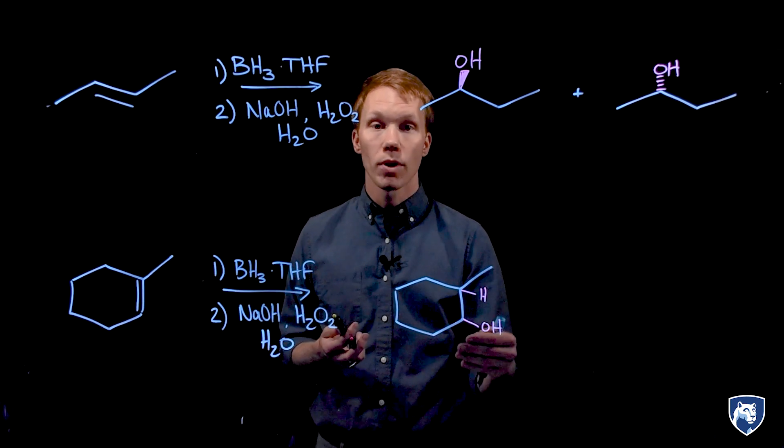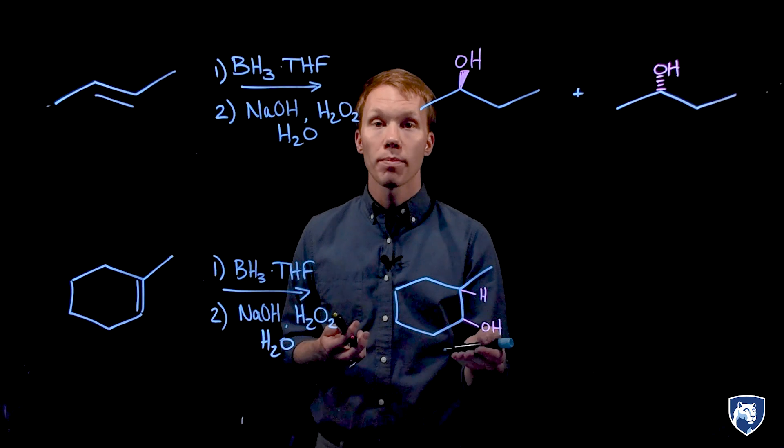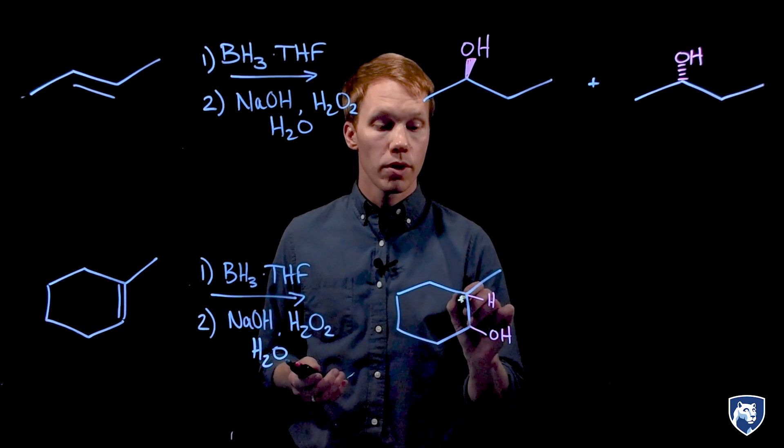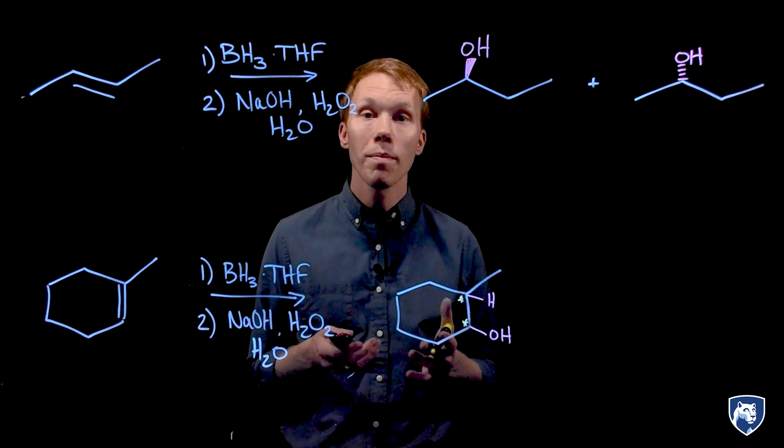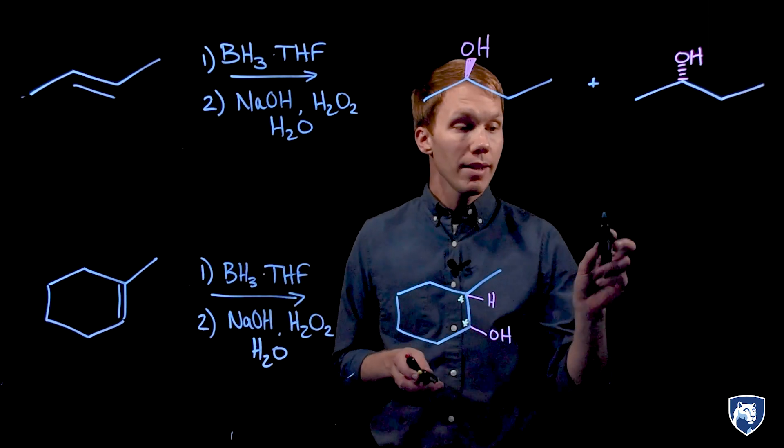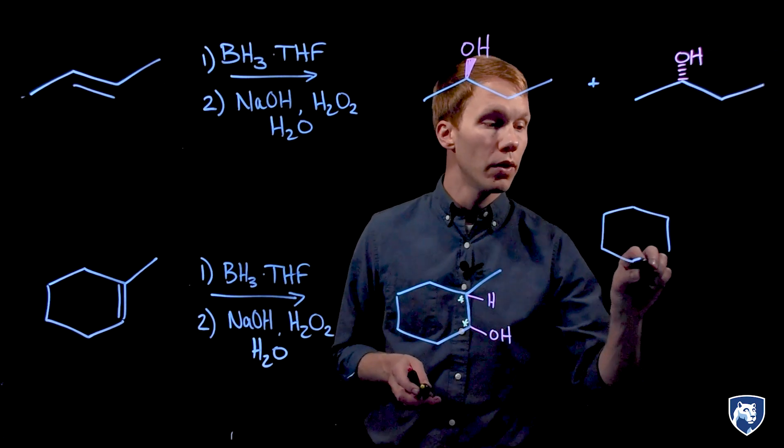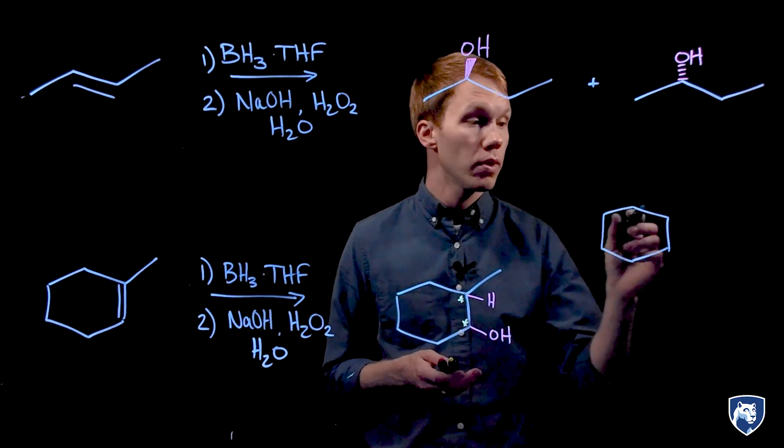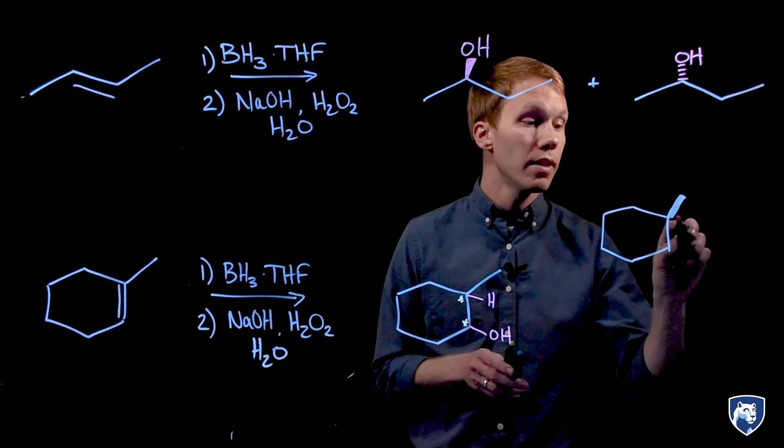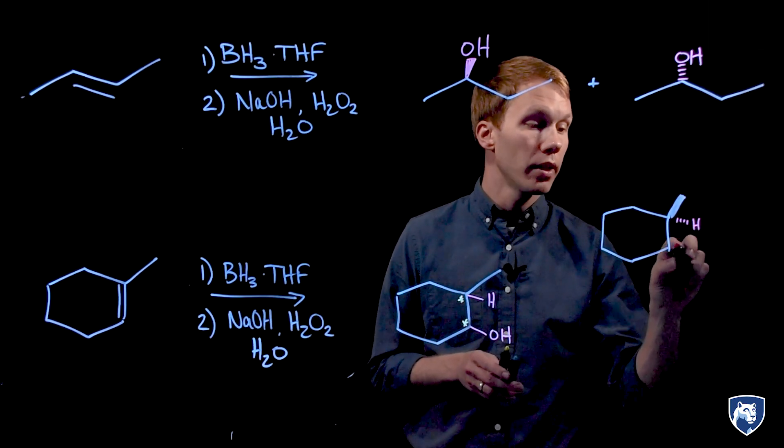How many stereoisomers are possible with this product that we produced here? There are 2 chirocenters produced in this reaction, so there are 4 possible stereoisomers in this family. When we isolate our products, we find that only 2 of those 4 possible stereoisomers are produced. The H and the OH have added to the same face of that molecule.